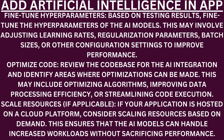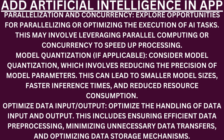Fine-tune hyperparameters. Based on testing results, fine-tune the hyperparameters of the AI models. This may involve adjusting learning rates, regularization parameters, batch sizes, or other configuration settings to improve performance. Optimize code. Review the code base for the AI integration and identify areas where optimizations can be made — this may include optimizing algorithms, improving data processing efficiency, or streamlining code execution. Scale resources if applicable. If your application is hosted on a cloud platform, consider scaling resources based on demand to ensure AI models can handle increased workloads without sacrificing performance. Parallelization and concurrency. Explore opportunities for parallelizing or optimizing the execution of AI tasks — this may involve leveraging parallel computing or concurrency to speed up processing.